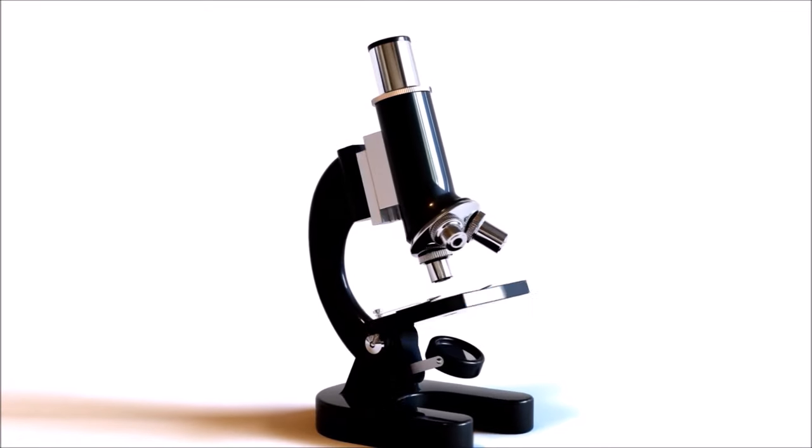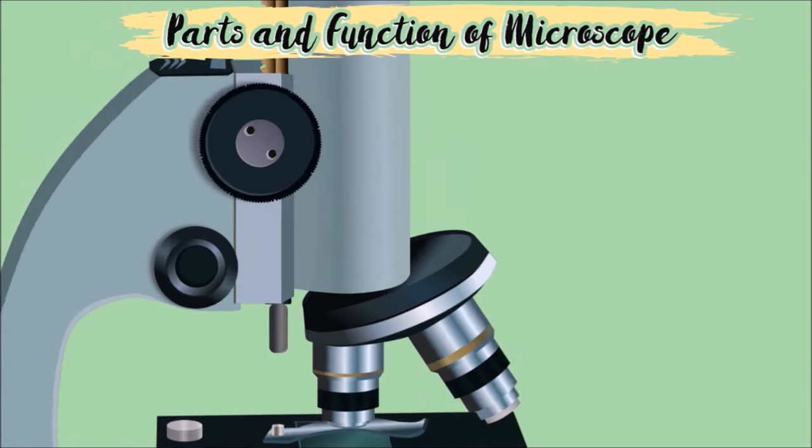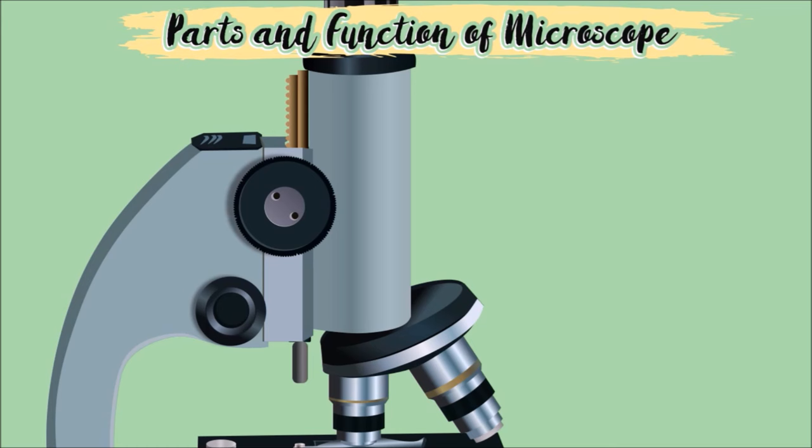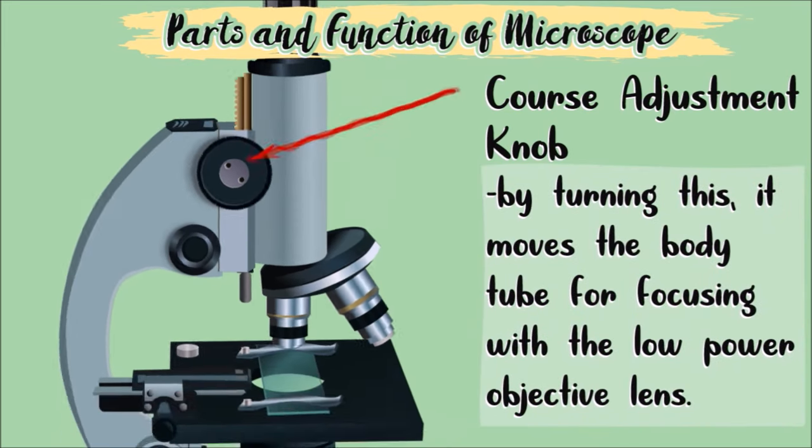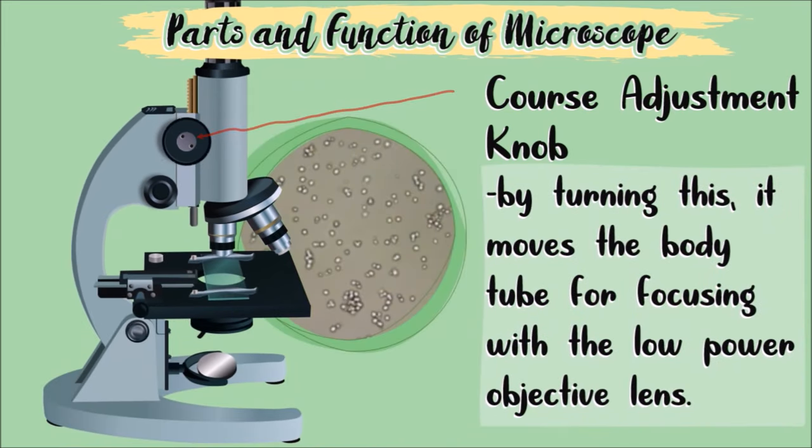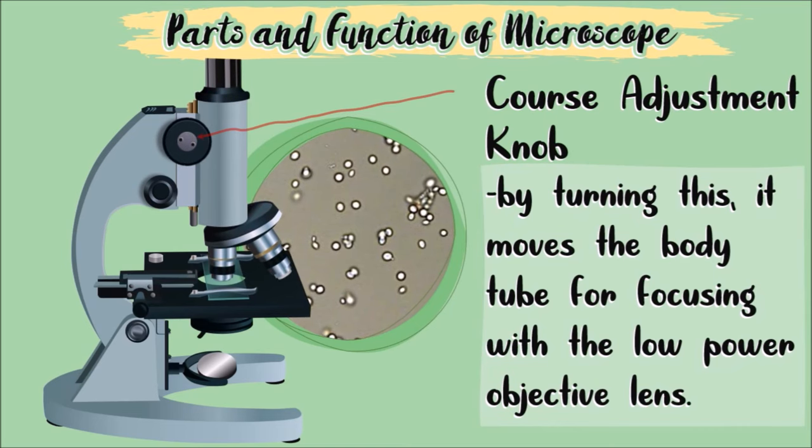Let's go back to the different parts of the microscope. This knob right here is also important. This is the coarse adjustment knob. By turning this, it moves the body tube for focusing with the low power objective lens.